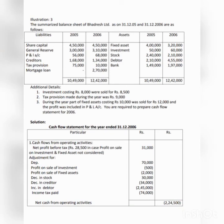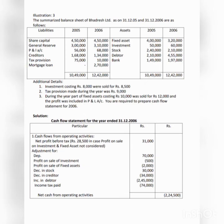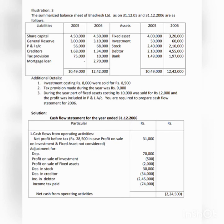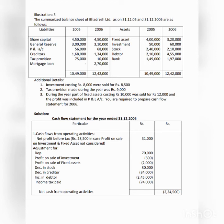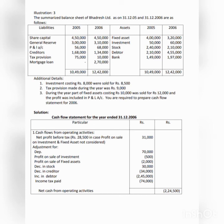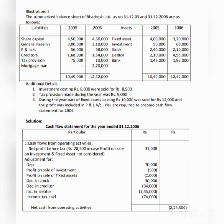In the balance sheet, fixed assets show an opening balance of 4,00,000 and a closing balance of 3,30,000, meaning there is a decrease of 70,000. This difference amount is known as depreciation. Transfer that depreciation amount to the operating activity statement and add it to the net profit.